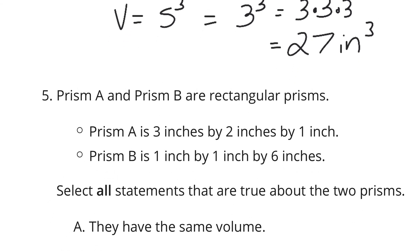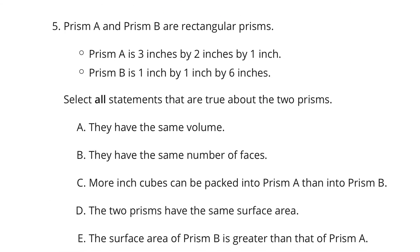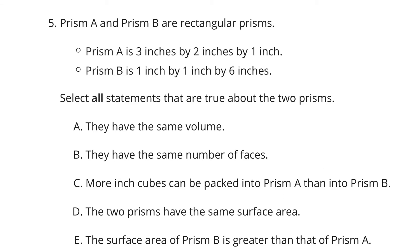Now, as we move on to question 5, we have to select a bunch of statements that are true. Prism A and B are rectangular prisms. Prism A is 3 inches by 2 inches by 1 inch, and prism B is 1 inch by 1 inch by 6 inches. Select all statements that are true about the two prisms. In question A, they have the same volume. Well, volume for prism A, length times width times height, is 3 times 2 times 1, which is 6 cubic inches, and in B, our volume is going to be 1 times 1 times 6, which also results in 6 cubic inches. So A is true.